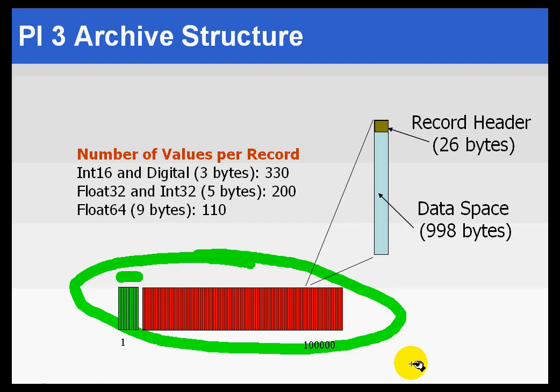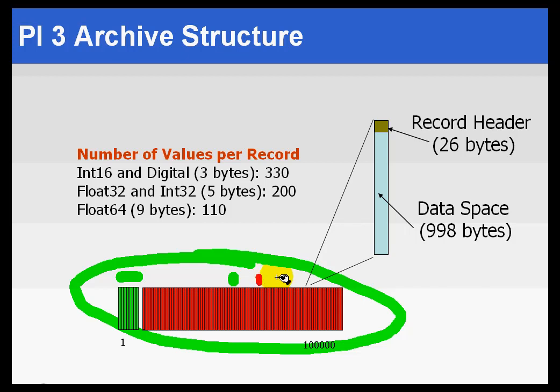That 50% has to be big enough to hold a primary record for each tag in the system. If you try to go to 50,000 tags, that's not a problem — that gets to just about halfway within these 100,000 records. But if you try to go greater than that, say 70,000 tags, you're going to have a problem because that's beyond 50% of the archive size.